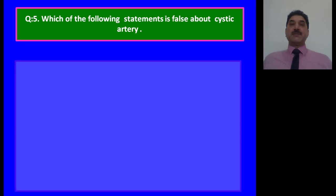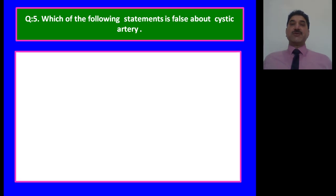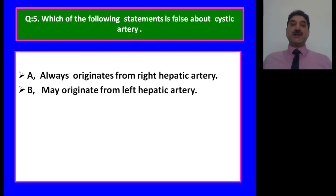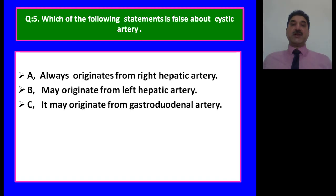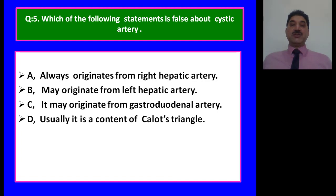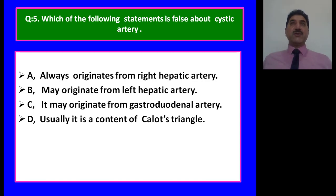Which of the following statements is false about the cystic artery? Options: A — it always originates from the right hepatic artery; B — it may originate from the left hepatic artery; C — it may originate from the gastroduodenal artery; D — it is usually a content of Calot's triangle. The answer is A — the cystic artery is known for variations in its origin and course, so it does not always arise from the right hepatic artery.